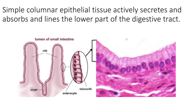Simple columnar epithelial tissue is composed of those tall column-shaped cells. It's interesting because all of the nuclei line up at the basal surface of that entire layer — they look like little soldiers lined up very perfectly against one another. You find this tissue primarily lining the stomach and the small and large intestine, where there is a lot of secretion and absorption, and of course protection.